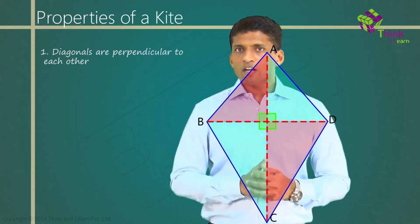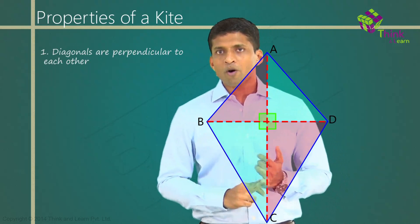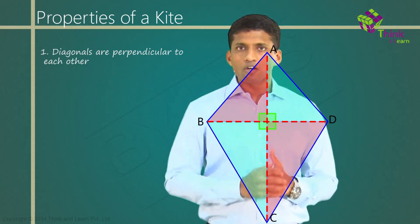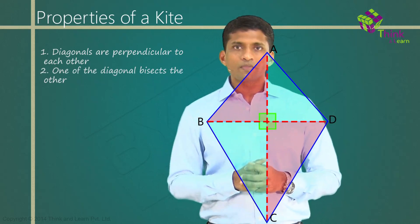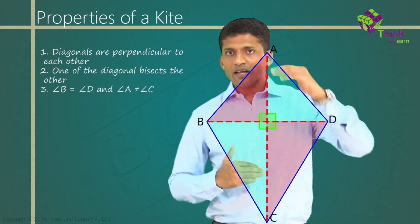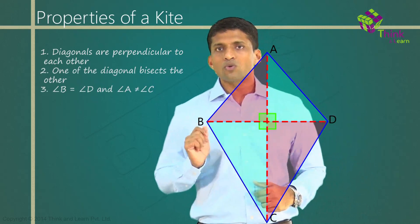So that is an important property of a kite. Diagonals are perpendicular to each other. One of the diagonals will bisect the other one. And angle B equals angle D, and angle A not equal to angle C.